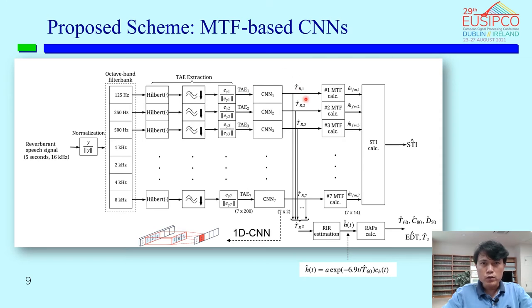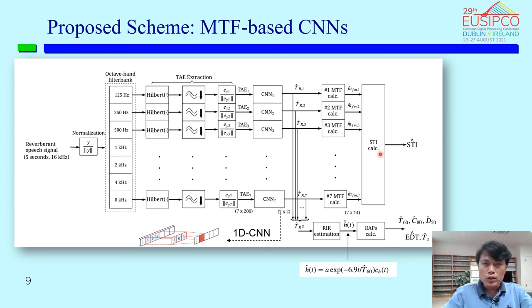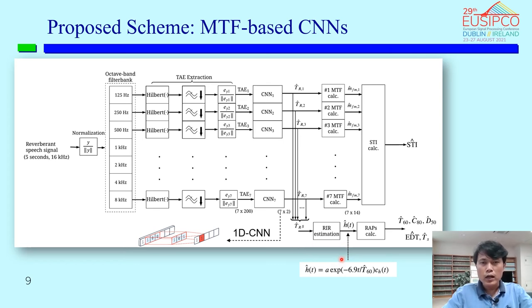In each band, the TAE is extracted and fitted to a non-linear mapping using a Convolutional Neural Network (CNN) to map the TAE to the reverberation time — the parameter in the Schroeder model. We utilize a one-dimensional CNN to convolve trainable filters with the time-domain TAE for each band. The relationship between reverberation time and the MTF is then utilized so that the STI can be estimated from the seven MTF values for the seven reverberation times across seven bands. We then reconstruct the unknown room impulse response associated with the Schroeder IR model.